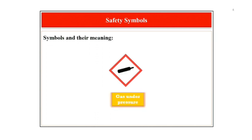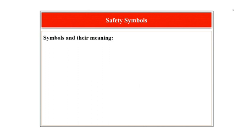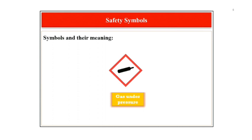The next symbol is the symbol for gas under pressure. Compressed gases, as indicated by the symbol, are routinely used in laboratories. There are three major types of gases stored under pressure in cylinders: liquefied gases, non-liquefied gases and dissolved gases. The high pressure within a cylinder makes compressed gases hazardous, as gas can flow rapidly from the cylinder and cause injury, fires or explosion.